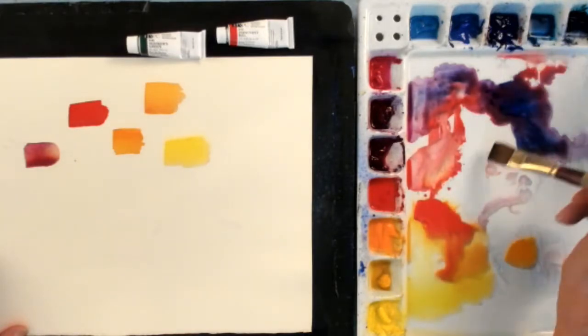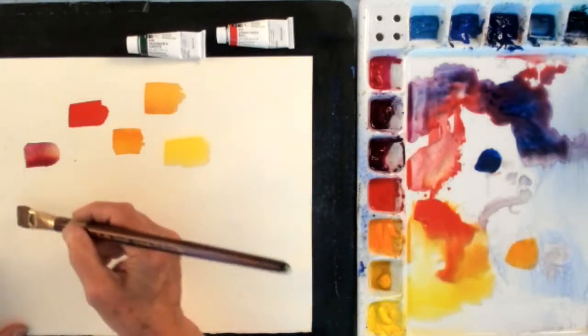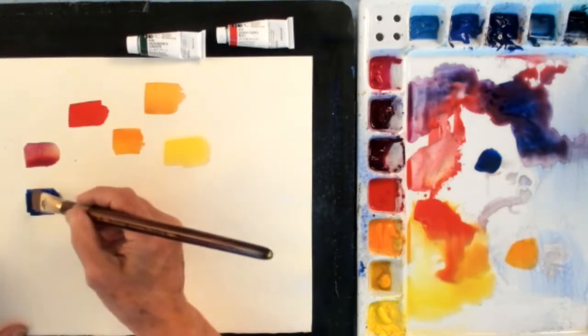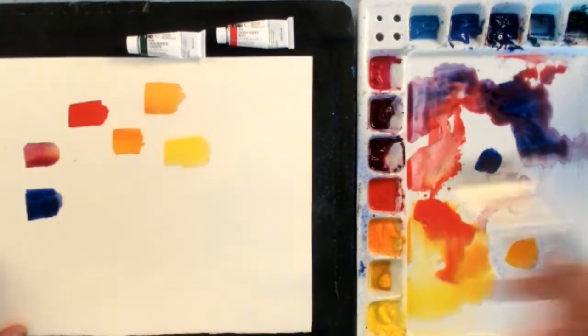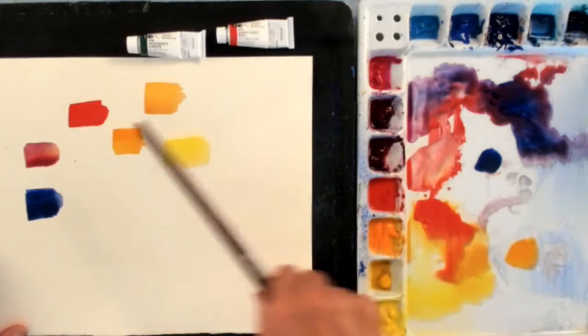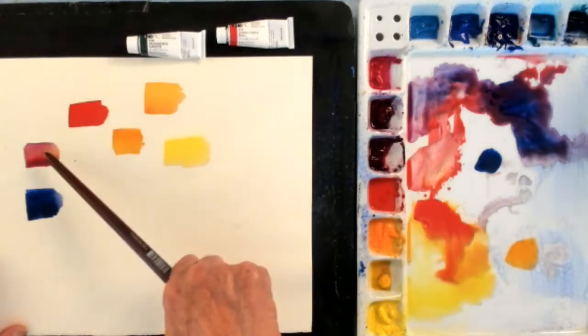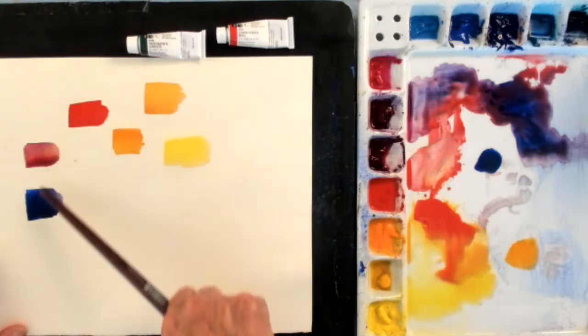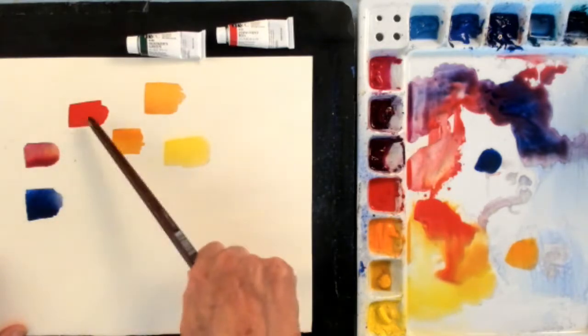The next color I put next to that is ultramarine blue. Ultramarine blue is a blue, but it's also biased, it has a little bit of red in it. So I'm still over here, the red, the quinacridone violet, and then the ultramarine blue, I still have got red on this part of the color wheel.